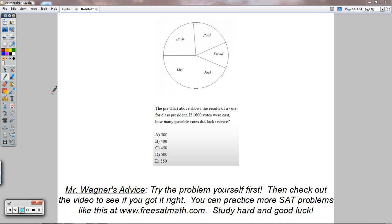Hello and welcome to SAT Math Question 62 here on Wagner Academy. The pie chart above shows the results of a vote for class president. If 1,600 votes were cast, how many possible votes did Jack receive?